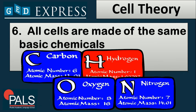The final concluding statement under the cell theory is that all cells are made of the same basic chemicals. No matter what the size or origin of that cell is, the primary composition will always be these basic chemicals: carbon, hydrogen, oxygen, and nitrogen.